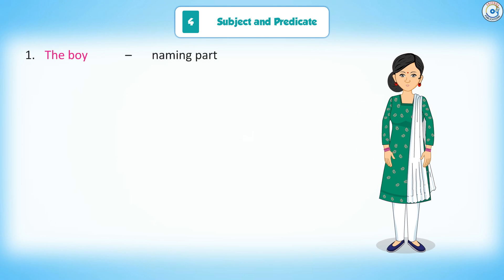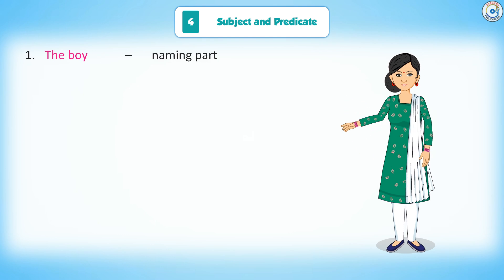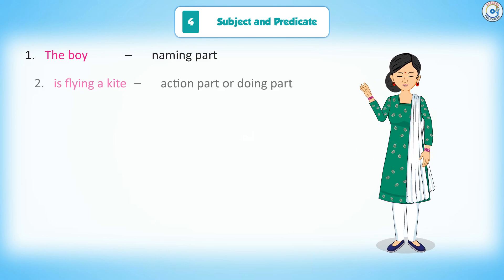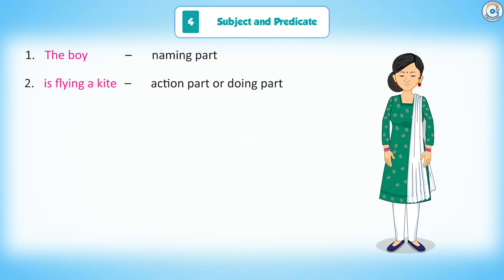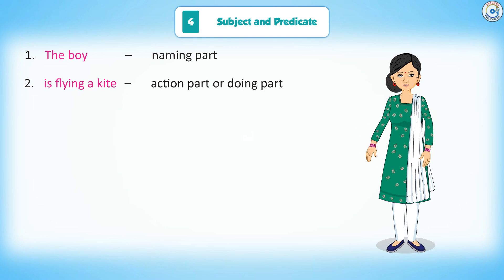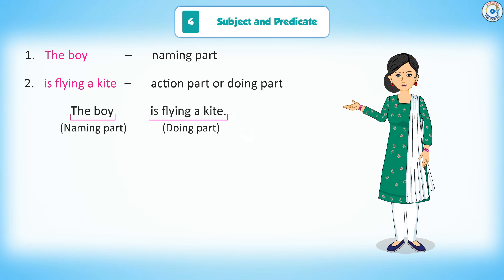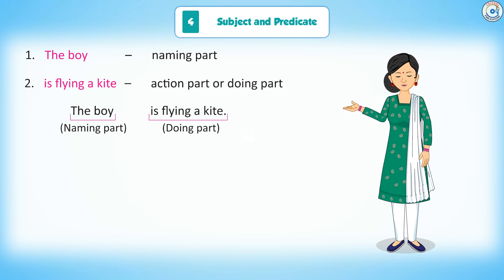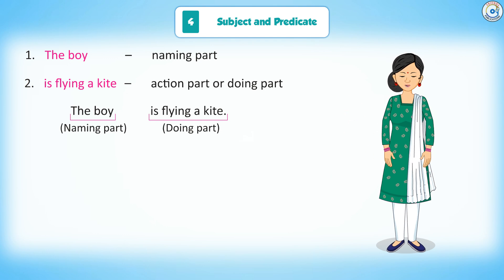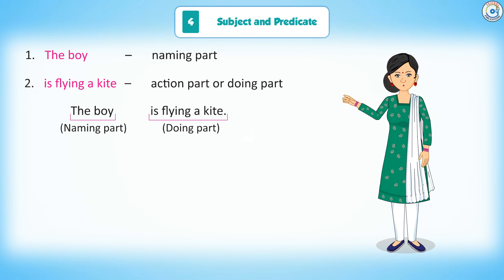1. The boy — naming part. 2. Is flying a kite — action part or doing part. The boy is the naming part; is flying a kite is the doing part.